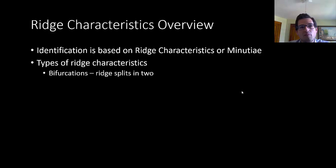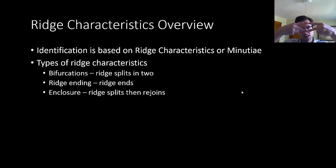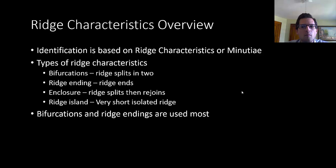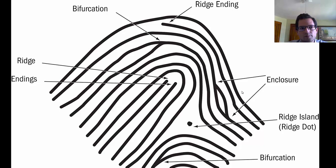What are the types of ridge characteristics we look at? We have bifurcations, where a ridge splits in two. We have ridge endings, where a ridge ends. We have enclosures, when a ridge splits and then rejoins. And we have ridge islands, which are very short isolated ridges. Sometimes they look like dots. Most AFIS systems focus on bifurcations and ridge endings, just because they're the easiest to discern.